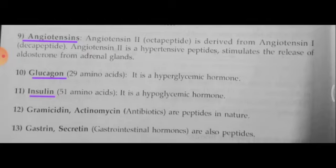Next is glucagon, a 29 amino acid peptide. It is a hyperglycemic hormone, meaning it increases the blood glucose level in the body. It is secreted from the alpha islets of Langerhans of the pancreatic cells. Insulin is also secreted from the pancreas, but from the beta islets of Langerhans. It is a hypoglycemic hormone — it decreases the glucose level. So glucagon increases glucose level while insulin decreases it.